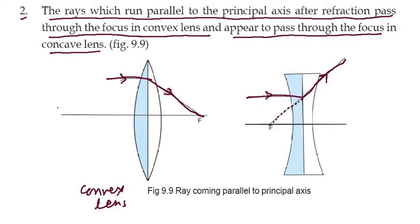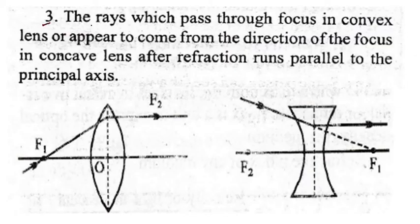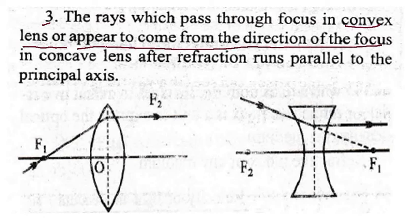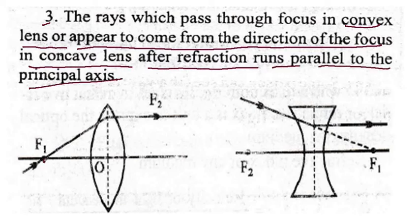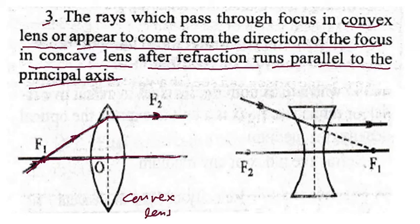That is the second rule. Now third rule: the ray which passes through the focus in a convex lens, or appears to come from the direction of the focus in a concave lens, after refraction runs parallel to the principal axis. You can see the ray coming from the focus — after refraction it becomes parallel to the principal axis in the convex lens. In the concave lens also, it appears to come from focus, and after refraction it runs parallel to the principal axis.